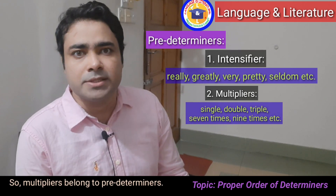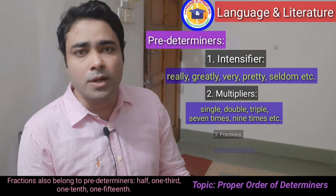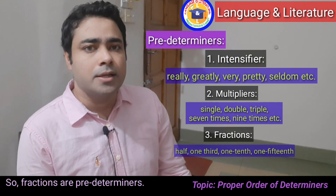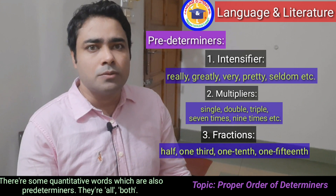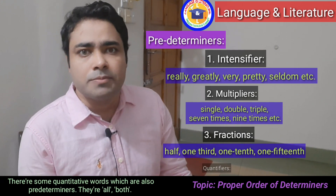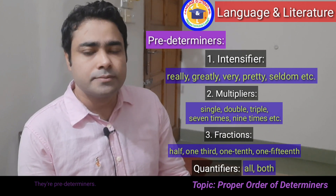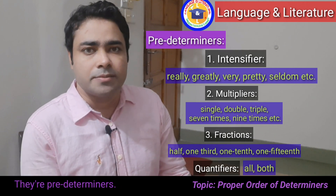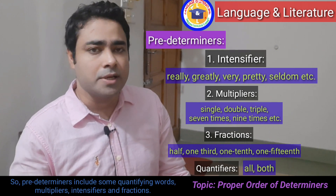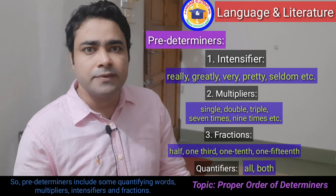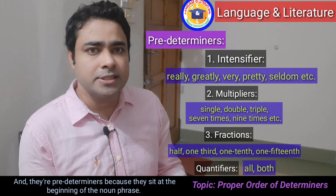Fractions also belong to predeterminers: half, one third, one tenth, one fifteenth. There are also some quantitative words which are predeterminers — they are all and both. So predeterminers include some quantifying words, multipliers, intensifiers, and fractions. They are called predeterminers because they sit at the beginning of a noun phrase.